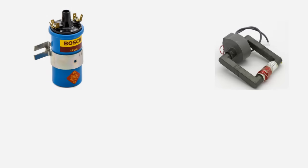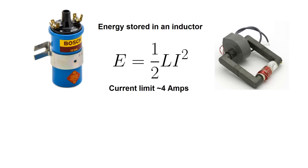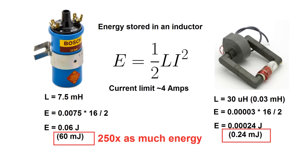This is because the larger inductor is storing more energy in the form of a magnetic field, as described by this formula. So for instance, suppose both coils had 4 amps flowing through them, the ignition coil in this example would store 250 times as much energy as the flyback transformer coil.